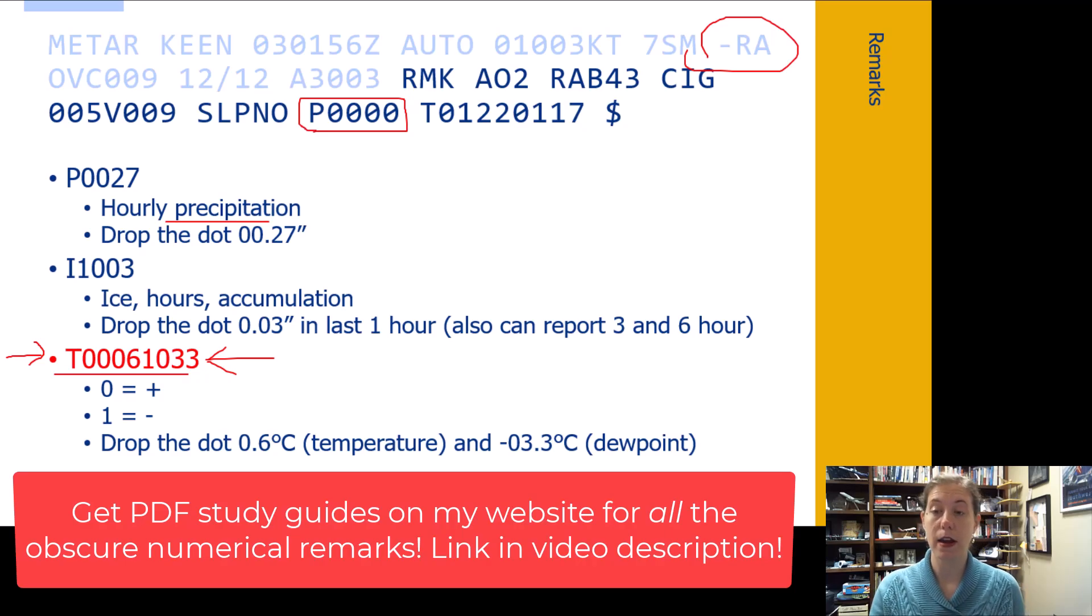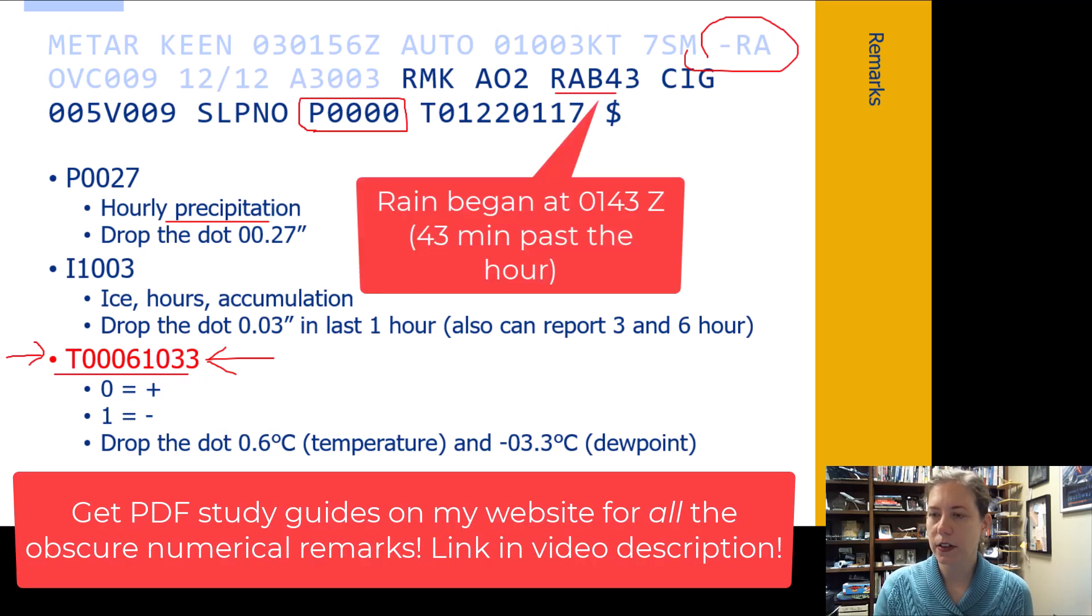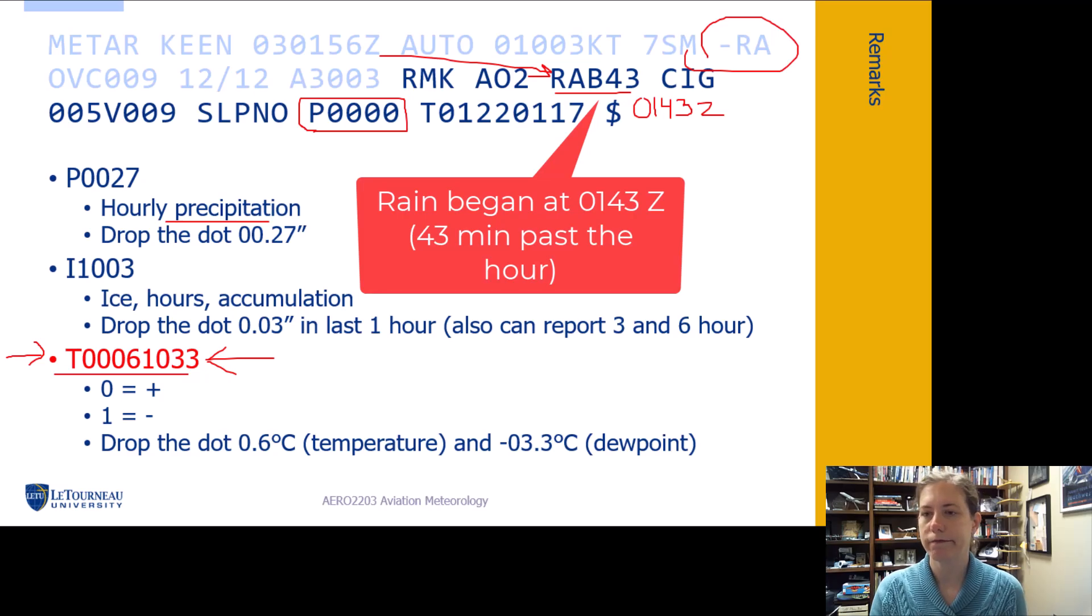So rain must've started at 0143Z. So it really hasn't been raining very long. We can see that it's only been raining like 13 minutes or something like that when they made the observation.